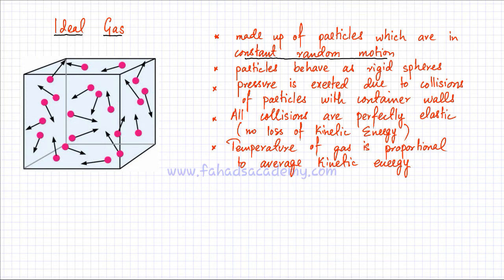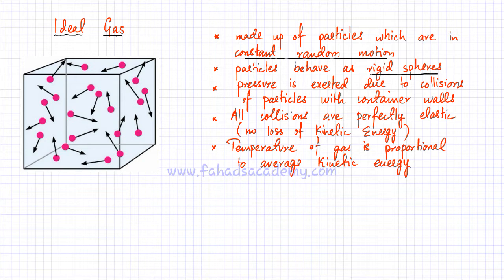Another thing about gas particles is that we assume they behave as perfectly rigid spheres. This means that if a collision occurs, they move around and behave as if the probability of going in all directions is exactly the same.